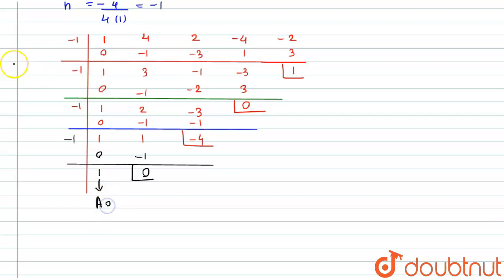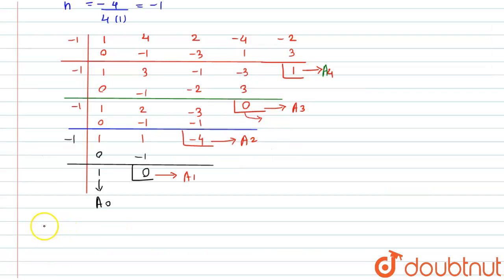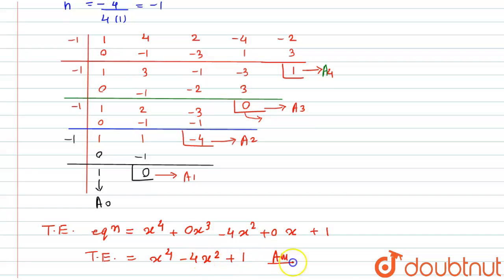This term is a₀; the 0 is a₁; this is a₂; this is a₃; and this is a₄. As stated in the question, the coefficient of the second highest power of x is 0. The transformed equation is: x⁴ + 0·x³ − 4x² + 0·x + 1 = 0, which simplifies to x⁴ − 4x² + 1 = 0. This is our required answer. Thank you.